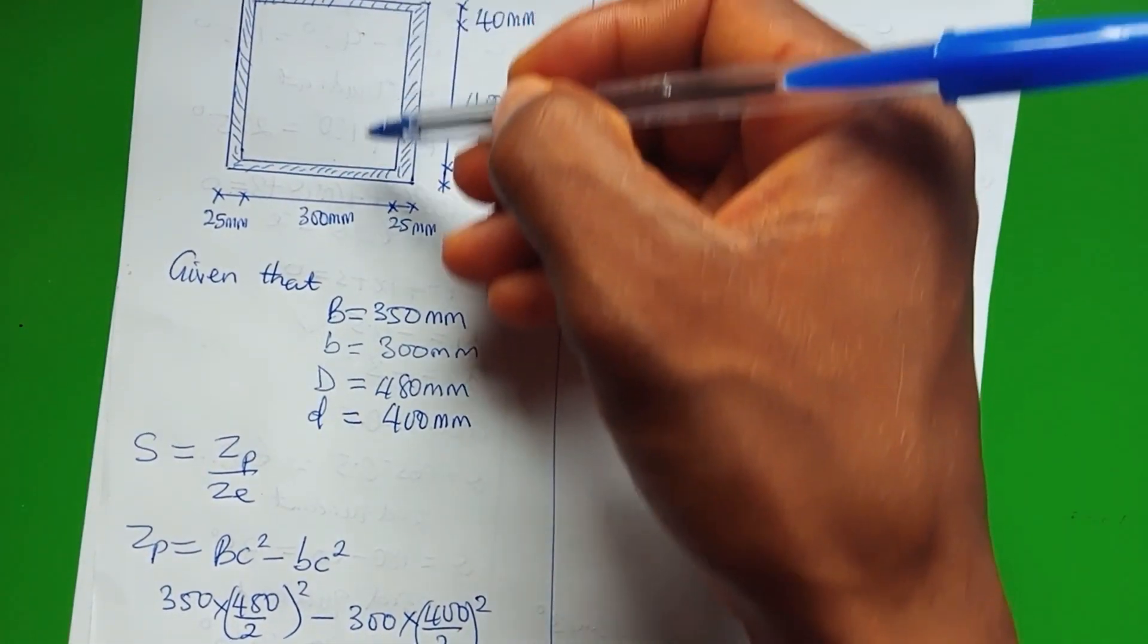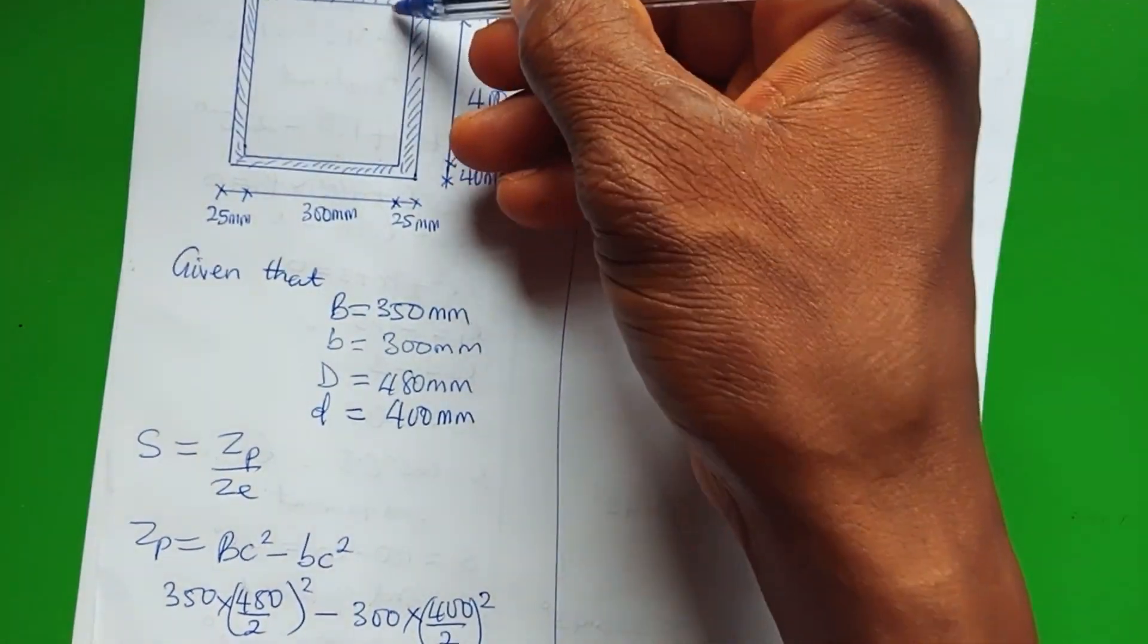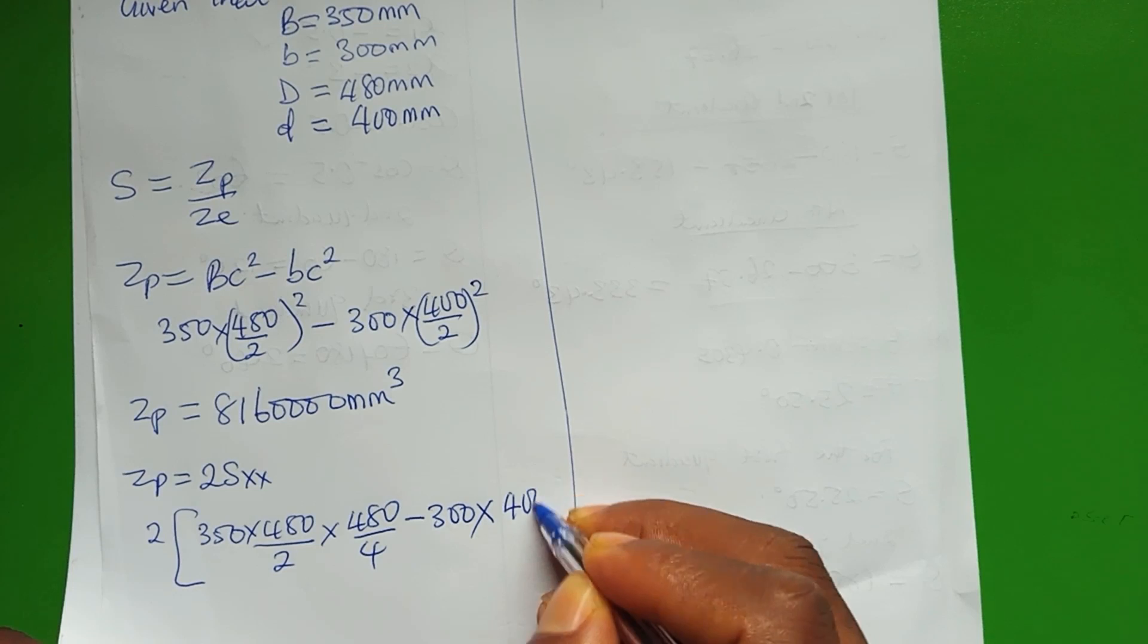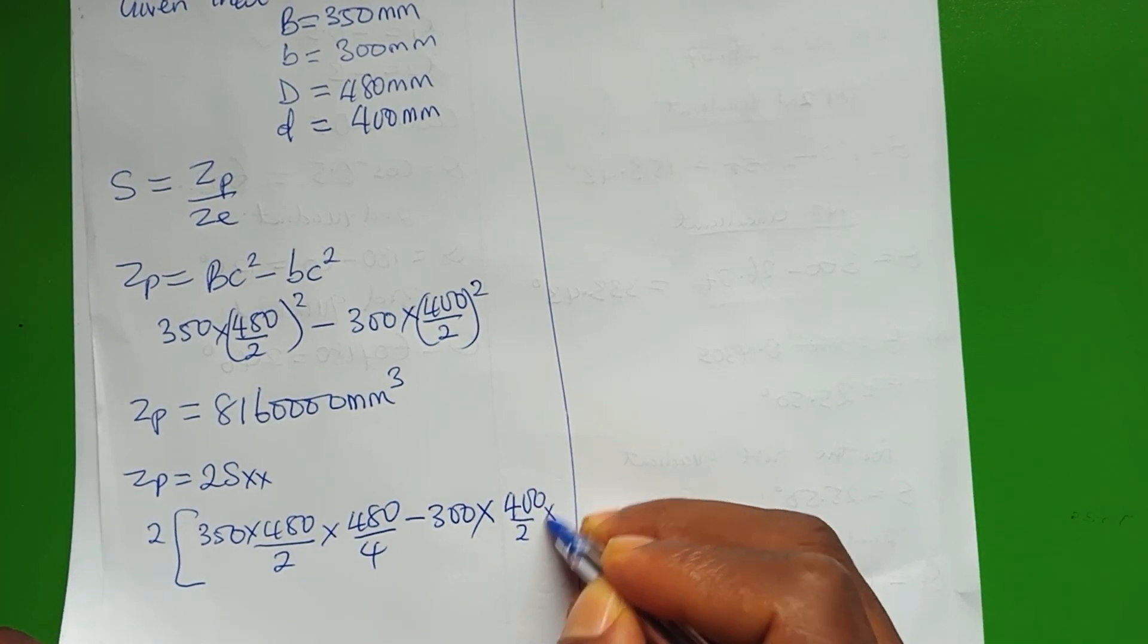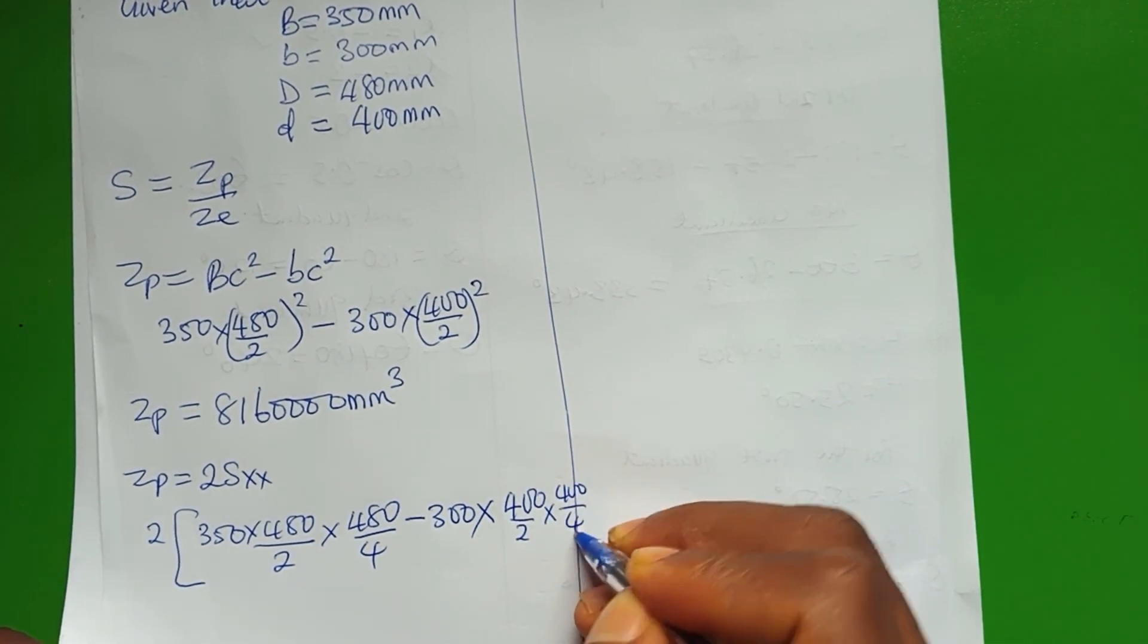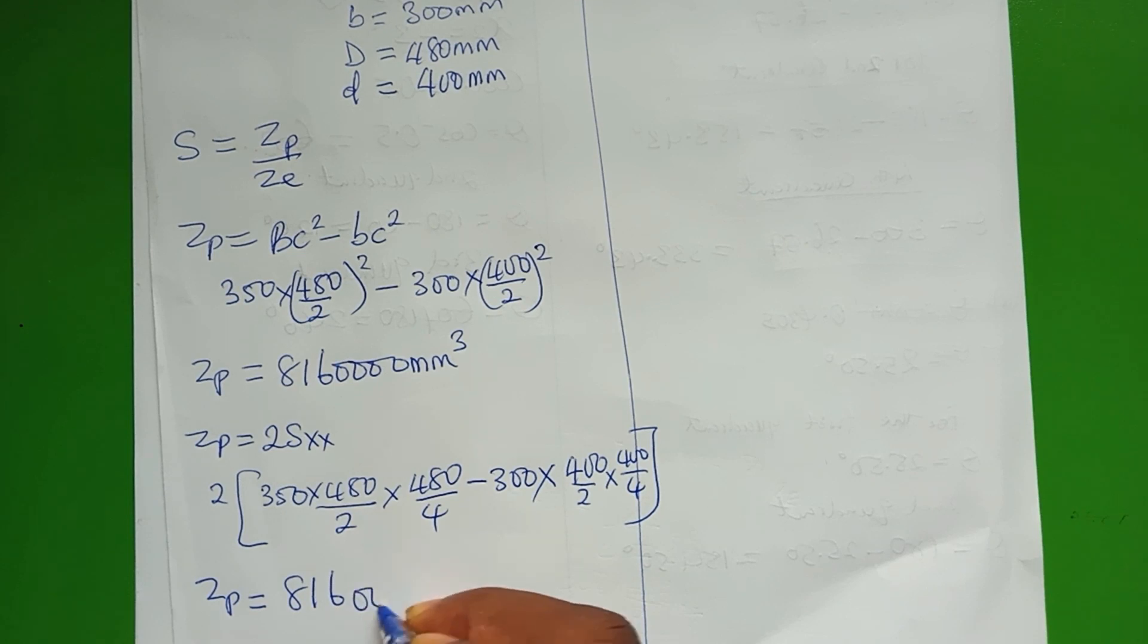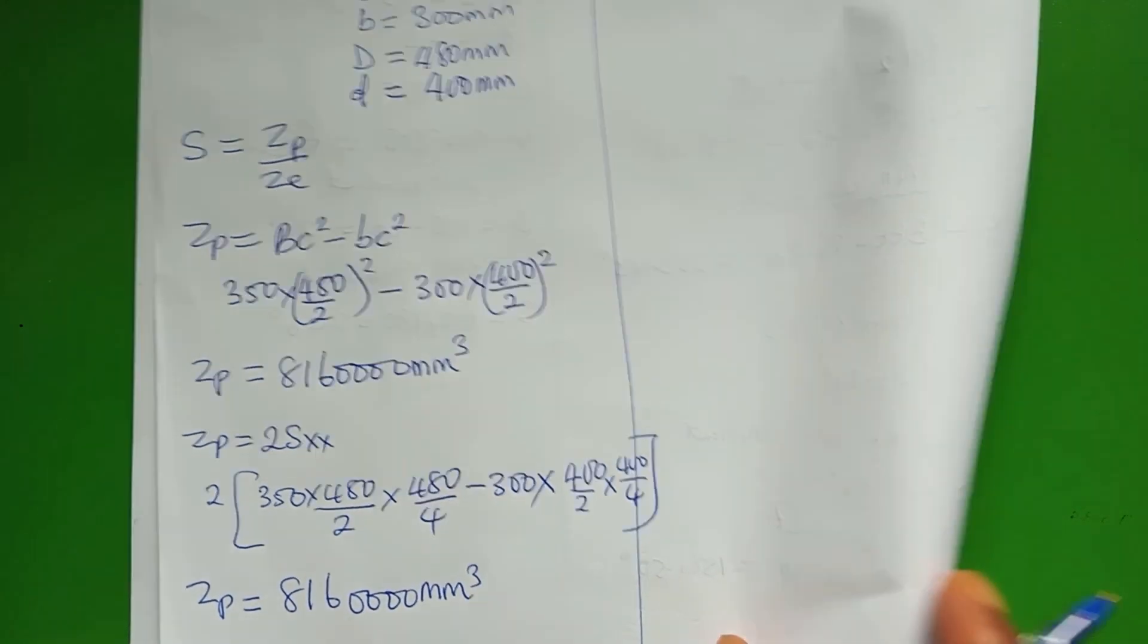Then minus 300 multiplied by the depth of the one inside, which is 400 over 2, then multiply by 400 over 4. If you play around with this, you still arrive at the same answer.